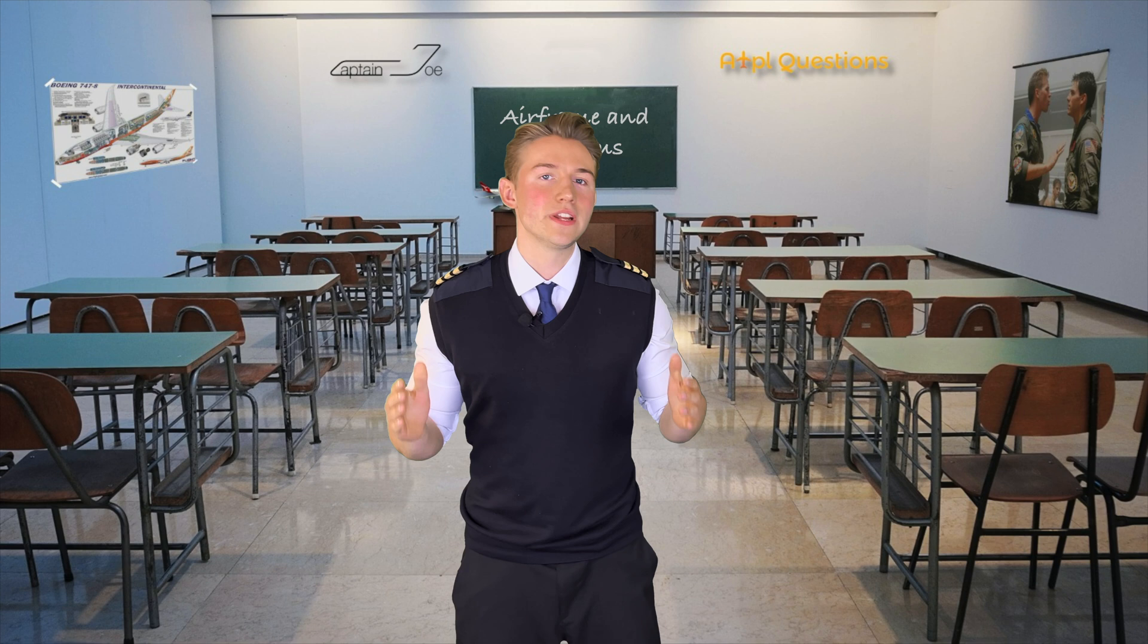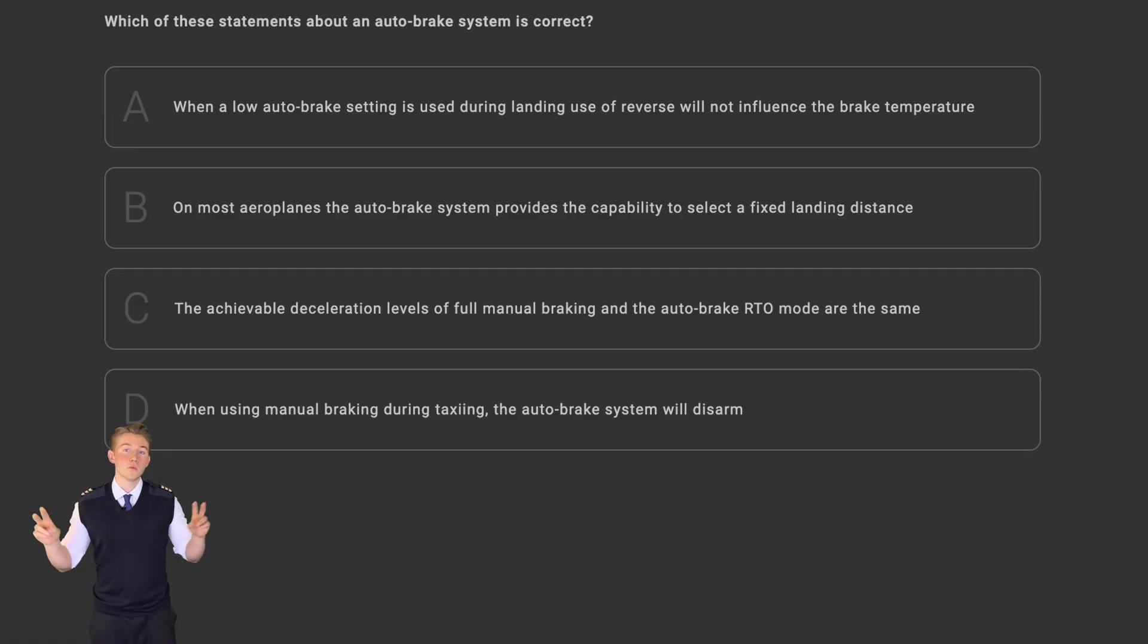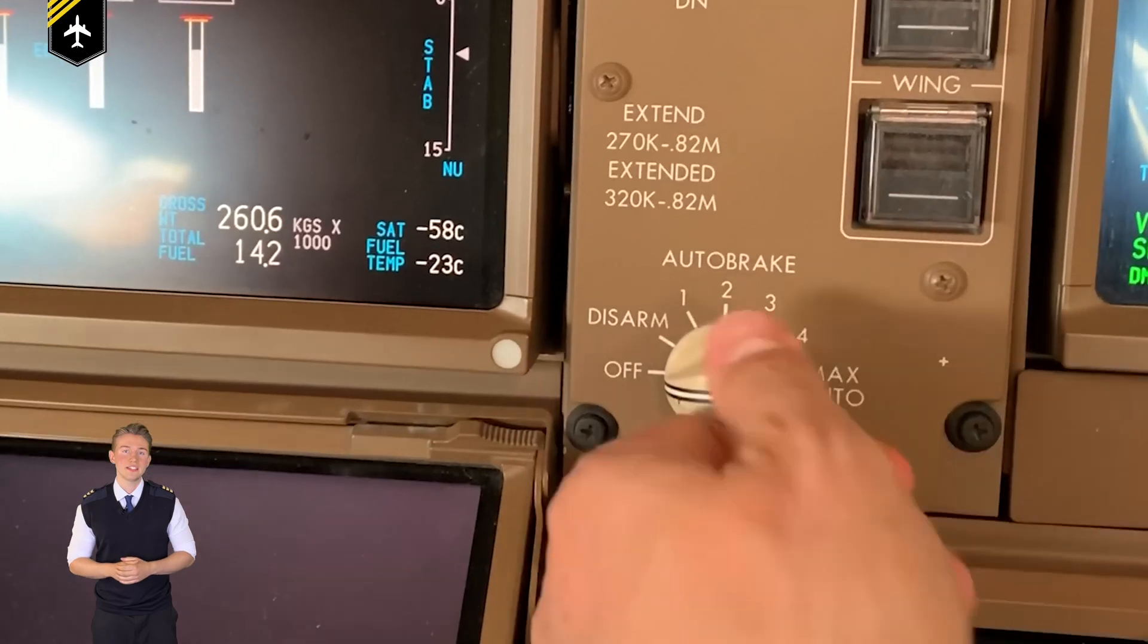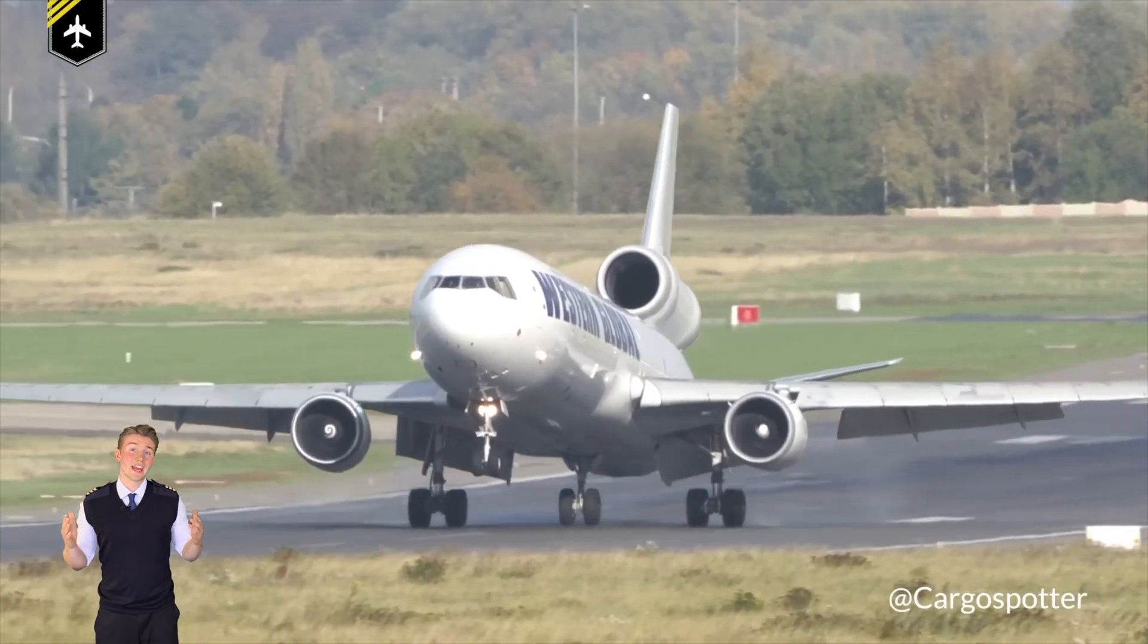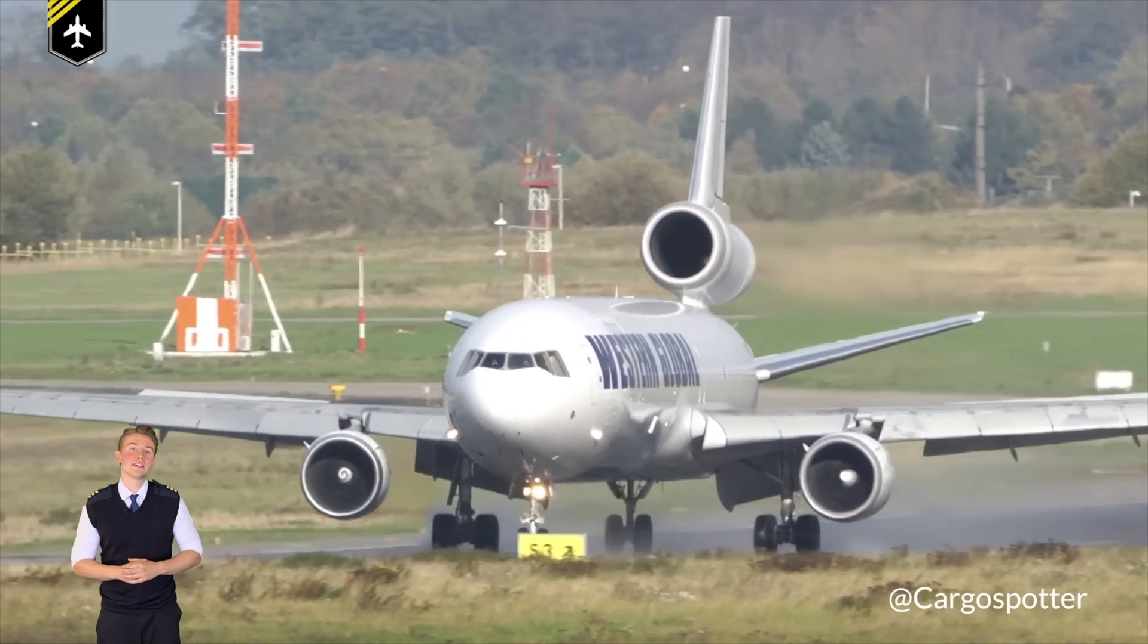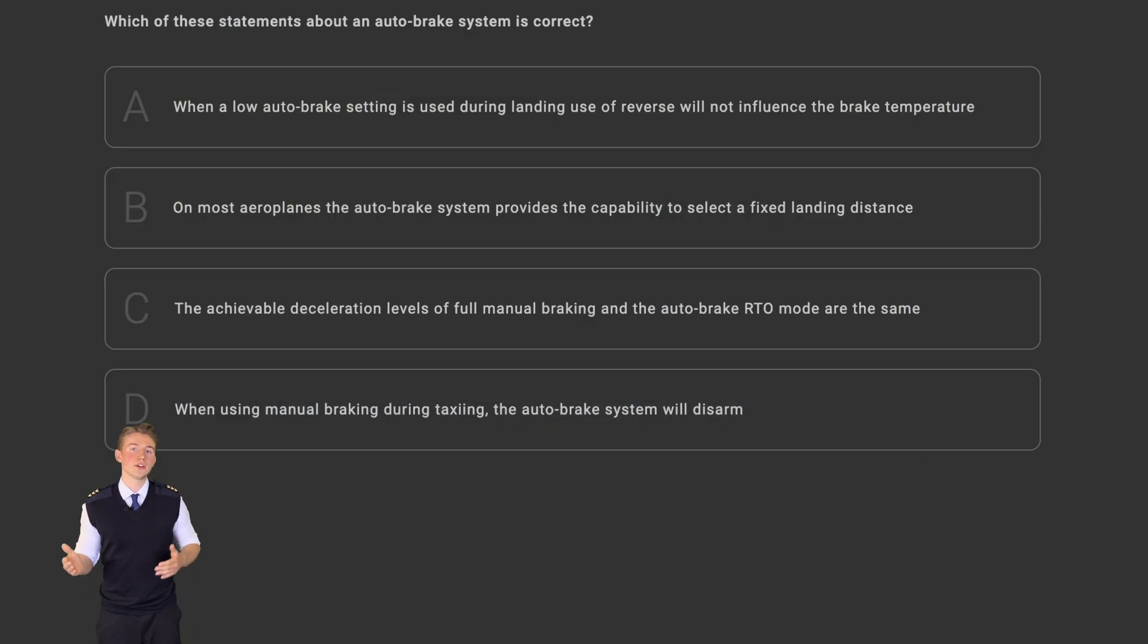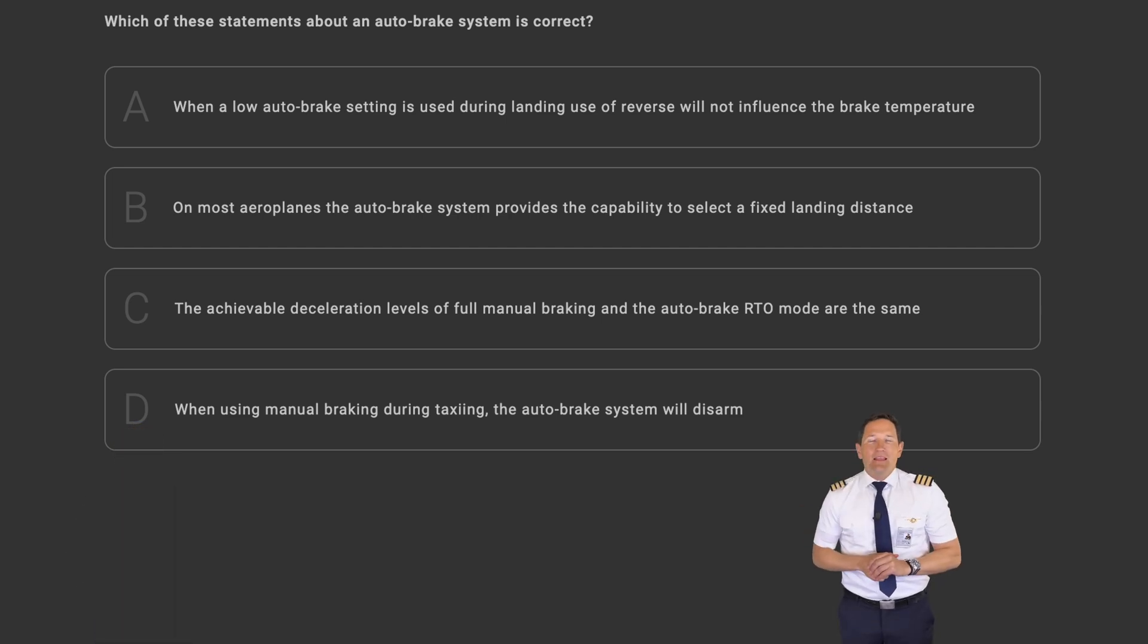Let's go through the answers step by step. Keep in mind, this is a which statement is correct question. Starting with answer A, which is incorrect, because autobrake settings aim for constant and predefined deceleration rates, so using any additional means that provide deceleration will result in a decrease of brake pressure of the autobrake system resulting in a lower brake temperature.